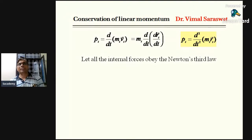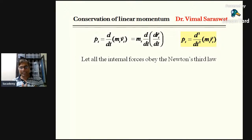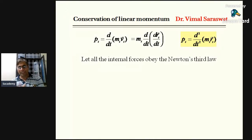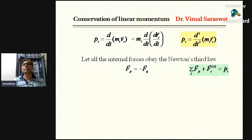Now, let all the internal forces obey Newton's third law, which states that to every action there is an equal and opposite reaction. So if F_ji is the internal force on the i-th particle due to the j-th particle, then F_ij is the internal force on the j-th particle due to the i-th particle. F_ij and F_ji are equal in magnitude and opposite in direction, so F_ij = −F_ji and F_ji = −F_ij.